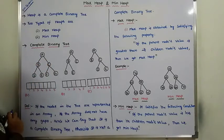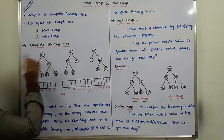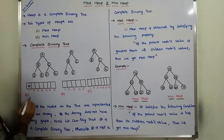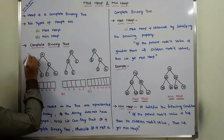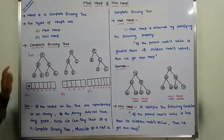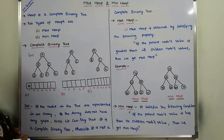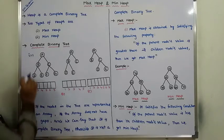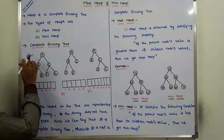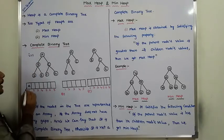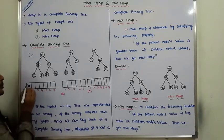Here root node is A. A is stored at index 1, so here index i is equal to 1. Its left child is located at 2i position, where i is the index. 2i means i value 1, so 2 into 1 equals 2. So left child is B, and B is located at index 2.